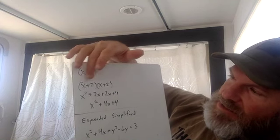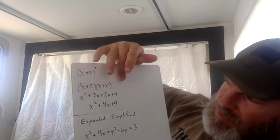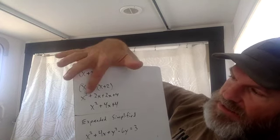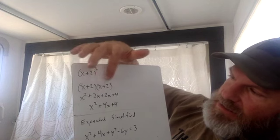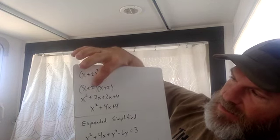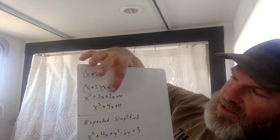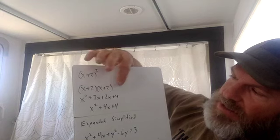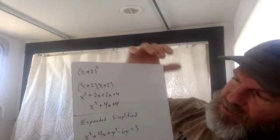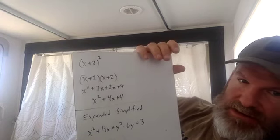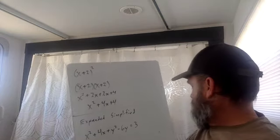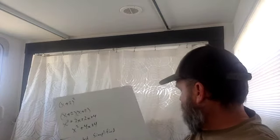You have to distribute the two through and distribute the x through. x times x is x squared, x times two is two x. Then you distribute the two: two times x is two x and two times two is four. Combine your like terms — the two x's — and you get x squared plus four x plus four.